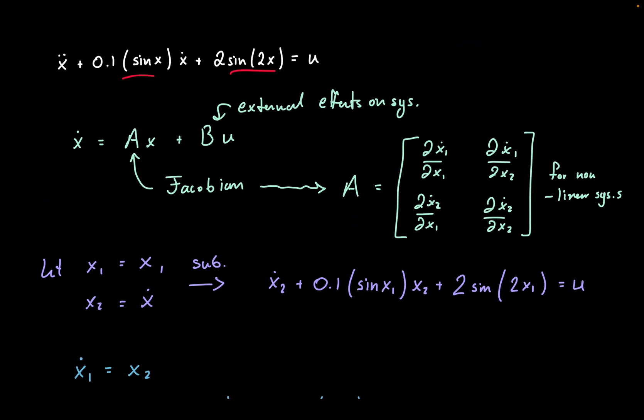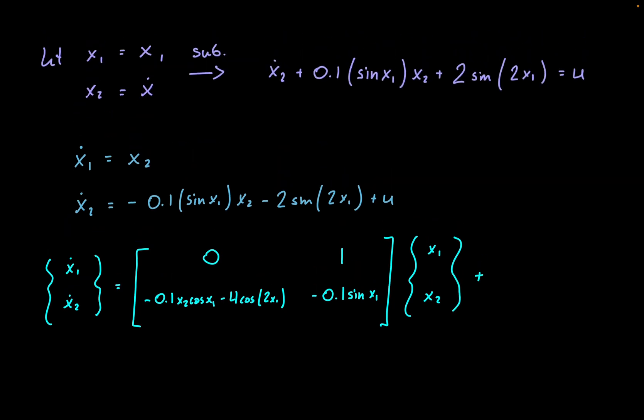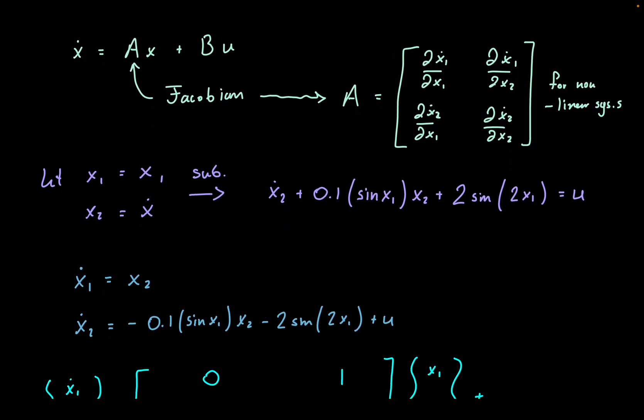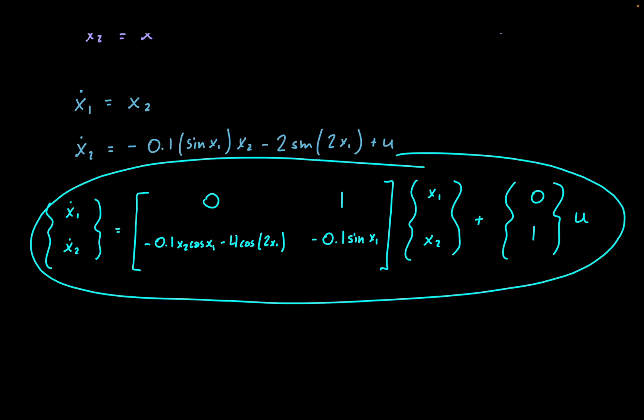The next part in our equation is just our vector of x's. So we'll have x1, x2, and then we have our vector of B, which will essentially be our coefficients of the external effects on the system. So with B, and then we'll multiply by u. For the first equation, we have no u in there, so we'll have a coefficient of 0. But for the second equation, there is one u in that equation, so we'll have a coefficient of 1. And now we have our state-space form for a nonlinear system.